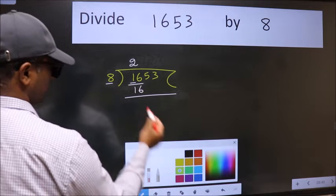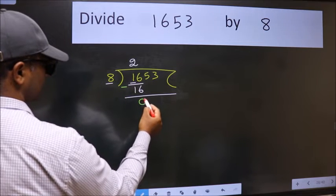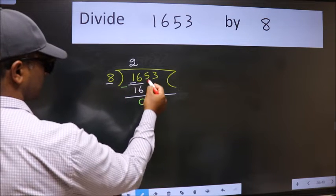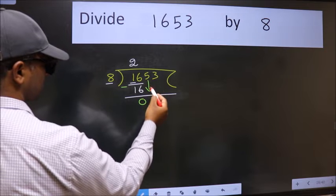Now, we should subtract. We get 0. After this, bring down the next number. So, 5 down.